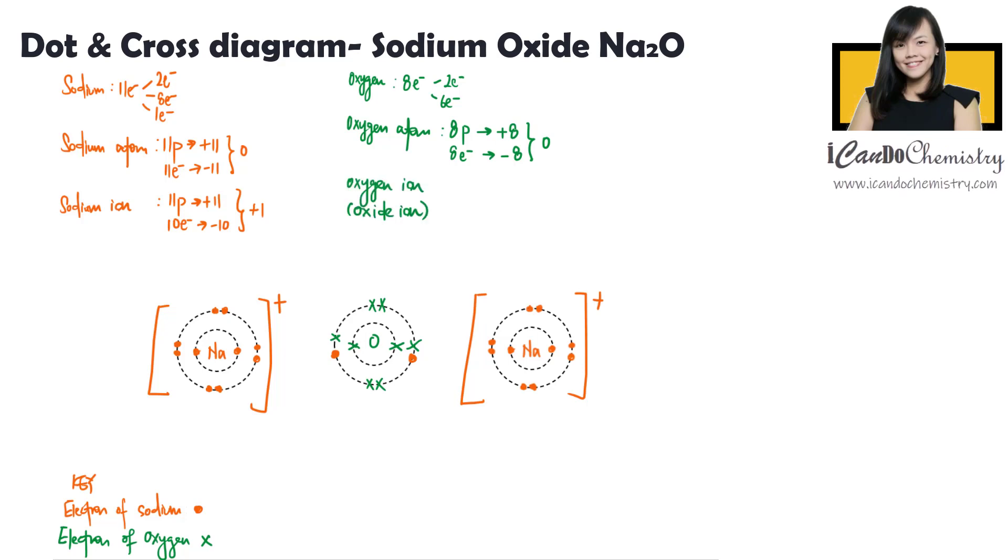Now when oxygen takes in electrons from sodium, the number of protons remain unchanged. Hence, the positive charge is still positive 8. However, there are 10 electrons now. Hence, the negative charge is negative 10. Overall charge in the oxide ion is negative 2. Now put the bracket and the charge in the dot and cross diagram.